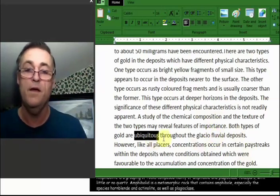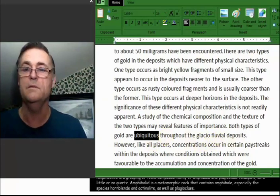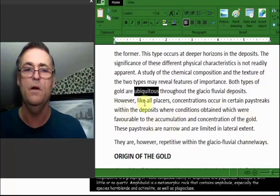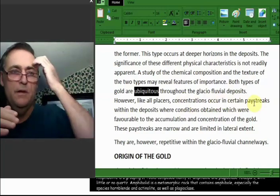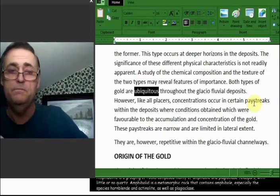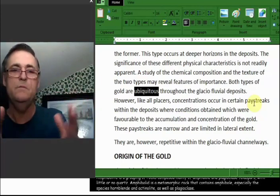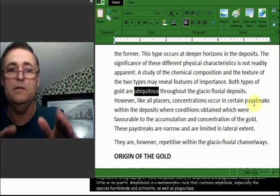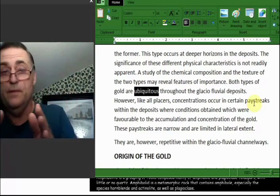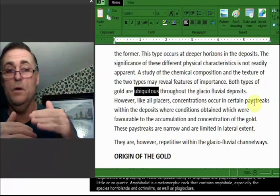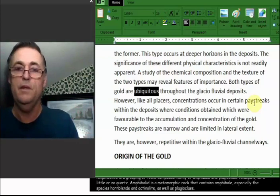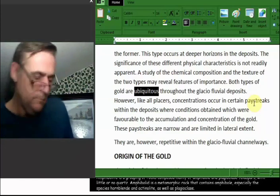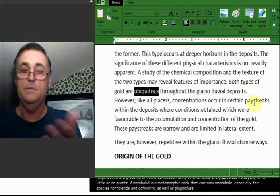So let's go back and read that again. Both types of gold are everywhere throughout the glacial fluvial deposits. Well, what's the next sentence? However, like all placers, concentrations occur in certain pay streaks. So there is... I've been saying this all along. For years I've been bugging people. I talk a lot about it. There's gold through all of it. We've invented machines for pulling out fine gold. According to this description, there's shot-sized gold throughout all of it. And then there's this other gold that's a little more.